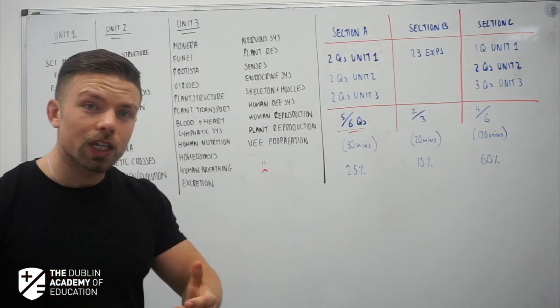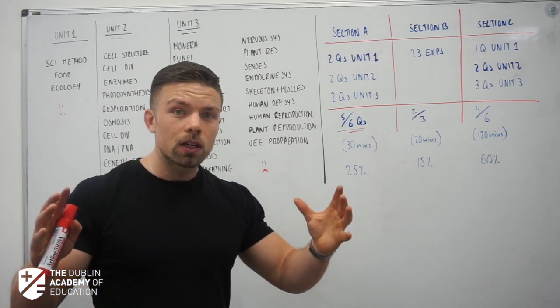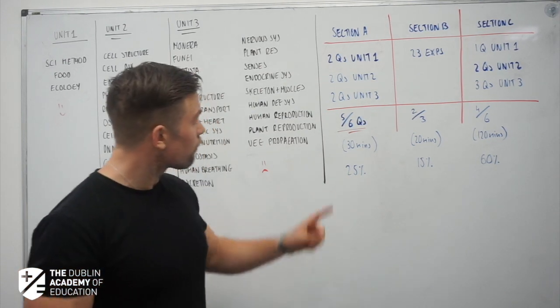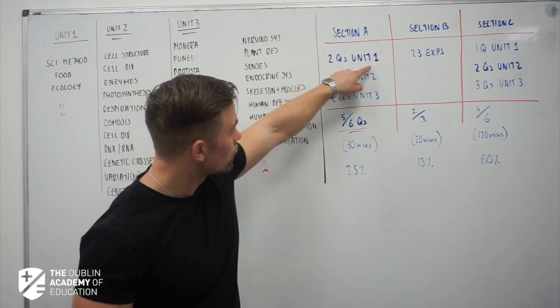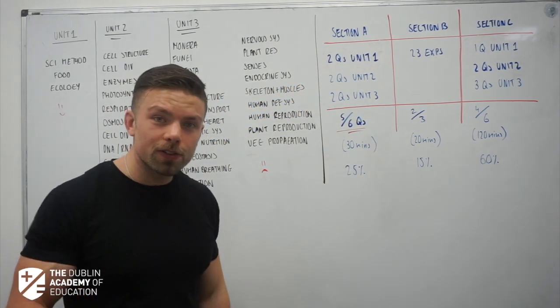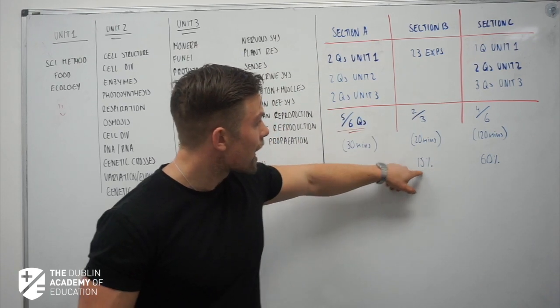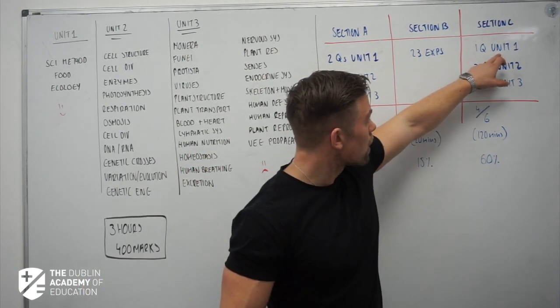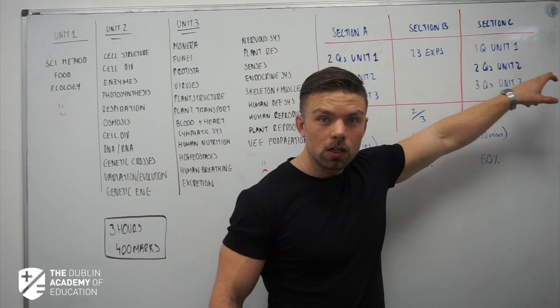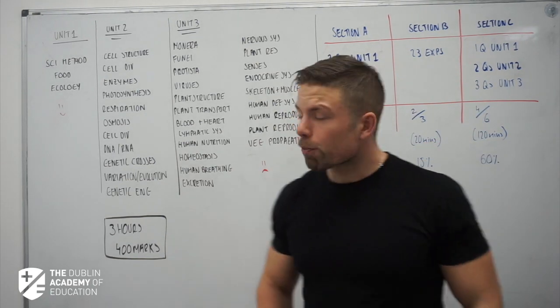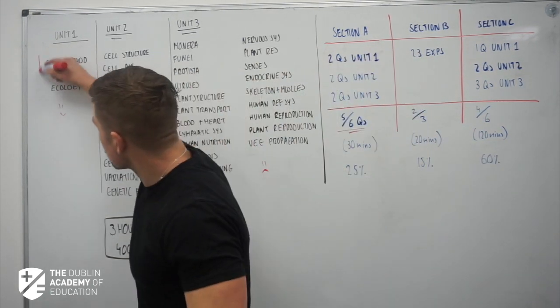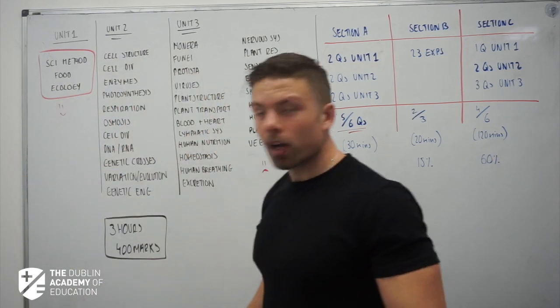Some students again, because it's so big, they get a little bit upset, but if you look at this, we've got two questions from Unit 1, that's going to be worth 15%. These experiments again, another 15%, and this other question over here, another 15%. So that's 40 to 45% of your paper based around these three chapters.